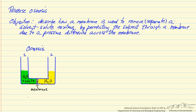In this screencast, I want to describe the process of reverse osmosis, in which we use a membrane to obtain a pure solvent from a solution of a solvent and a solute. In particular, this is the process used to obtain water from salt water. The idea is that we have a membrane that is permeable to water but almost impermeable to the salt.